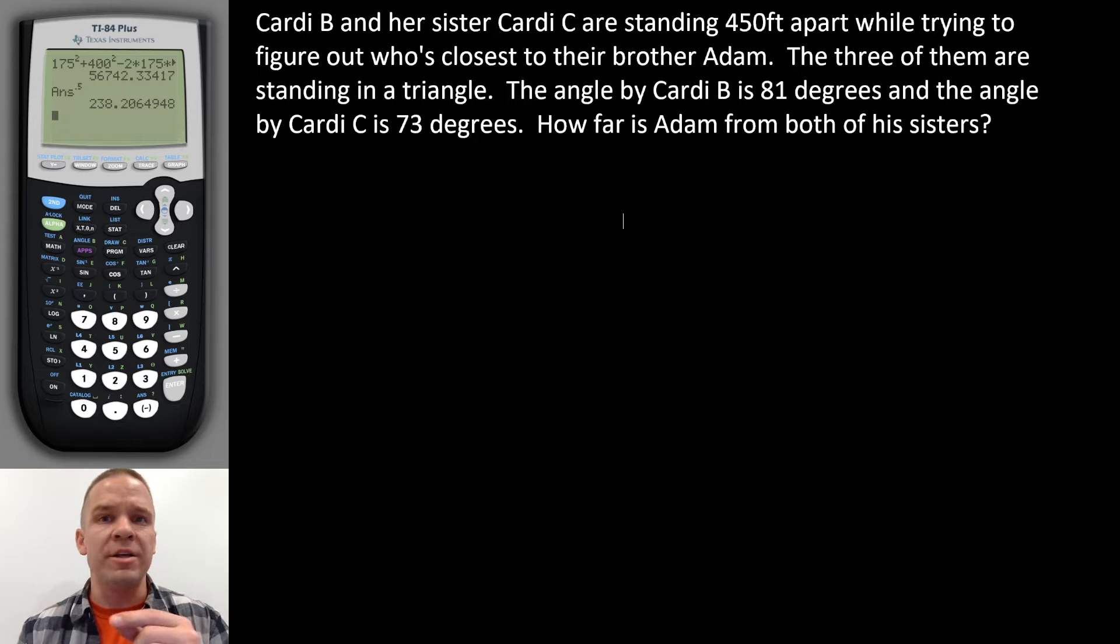We got Cardi B and her sister Cardi C. They're standing 450 feet apart while trying to figure out who's closest to their brother Adam. He didn't get the cool names. The three of them are standing in a triangle.